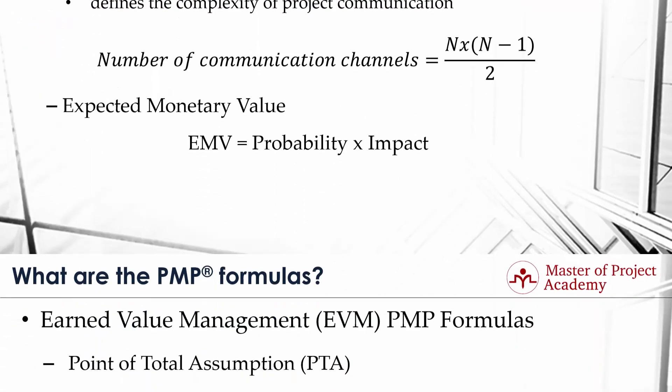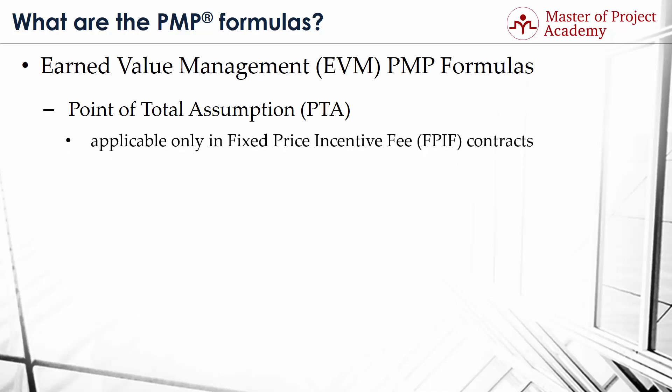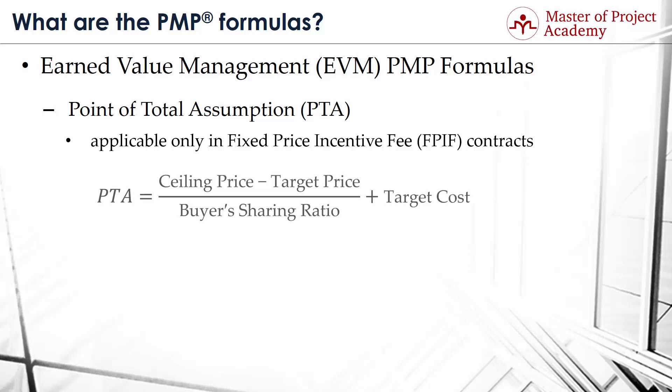PMP formula number 15: Point of Total Assumption or PTA. PTA is applicable only in Fixed Price Incentive Fee or FPIF contracts. Costs above the PTA level are considered to be due to mismanagement. PTA equals the result of ceiling price minus target price, all divided by the buyer sharing ratio, and then that result added to the target cost.